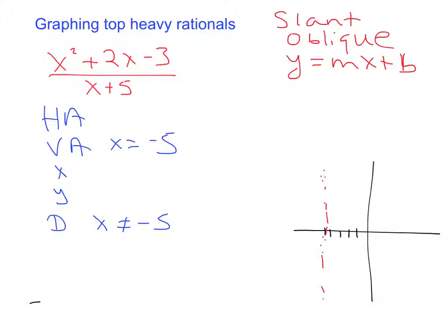Okay, so now I'm going to go ahead and actually let's find our horizontal asymptote. So our horizontal asymptote comes from doing some long division. So I'm going to have x plus 5 and I'm going to divide that into x squared plus 2x minus 3.